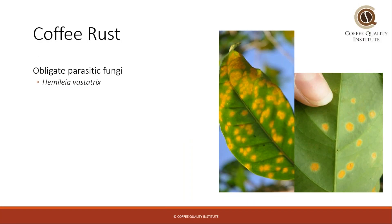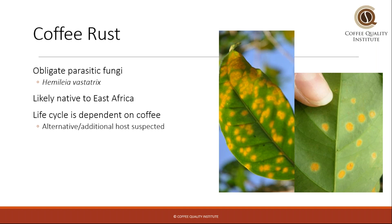First, I'm going to cover coffee rust, which is a big important one. It is an obligate parasitic fungi, which basically means that it is stuck to one host — obligate — and it's parasitic, which means it takes but does not give. It is likely native to East Africa, and its life cycle is dependent on coffee specifically. It is suspected that it has an alternative host, but that's yet to be determined.